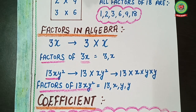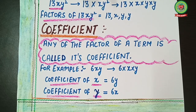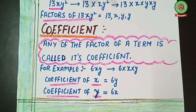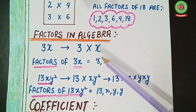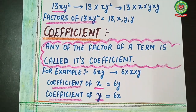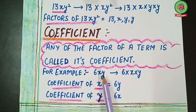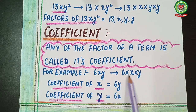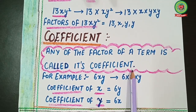Now we'll talk about coefficients, which we have studied in previous classes. Any of the factors of a term is called its coefficient. For example, take 6xy. We can factorize it into 6 × x × y. The coefficient of x is found by hiding x — what is left is 6y. So the coefficient of x is 6y.